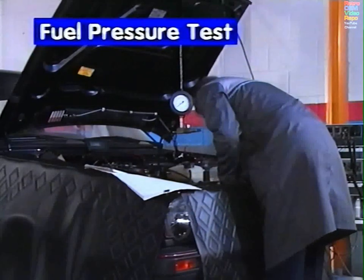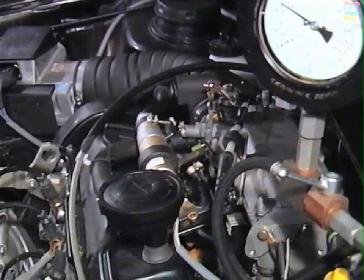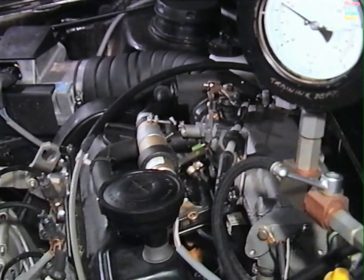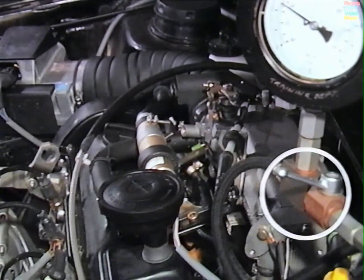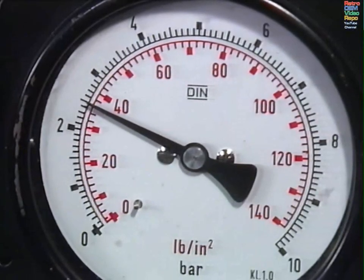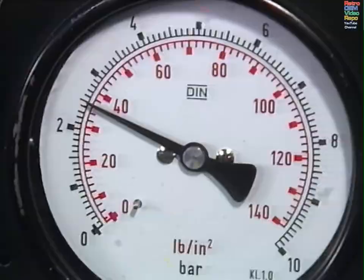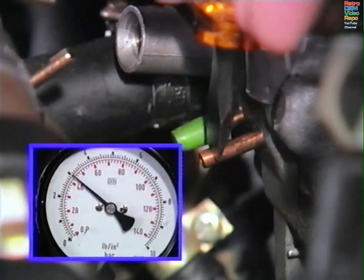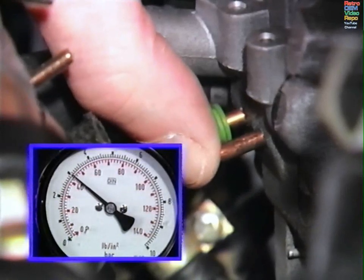Fuel pressure test. Fuel pressure can be checked by connecting a suitable pressure gauge to the test point on the right hand end of the fuel distributor. Make sure the stopcock on the gauge is closed. When the engine is idling, the pressure should be 2.5 bar. This reading may vary depending on engine size, so check your repair information. When the vacuum hose to the pressure regulator is removed, the reading on the gauge should increase to 3 bar.